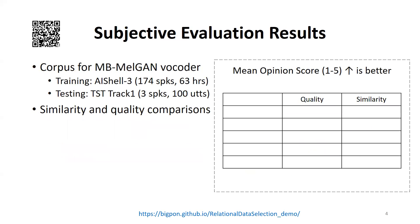AISHELL-3 was adopted as the multi-speaker corpus for the speaker-independent vocoder training and data selection. VCTK was adopted as the testing corpus. Similarity and quality MOS tests were conducted.